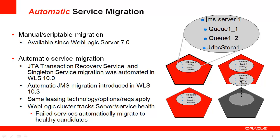The second option for automatic service migration is to choose a policy of failure recovery. When using this policy, the user chooses a preferred server to which the service is first targeted. The service will only be migrated in the case of an internal error or a system crash. The service would not be migrated if the preferred server is shut down intentionally, either forcefully or gracefully.